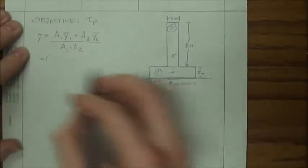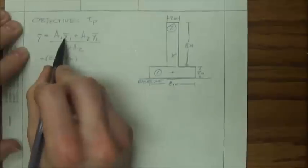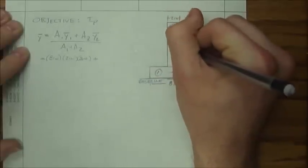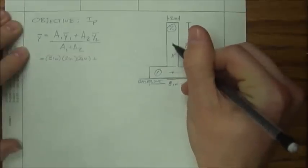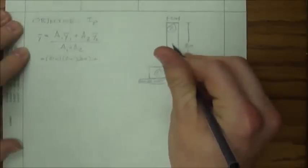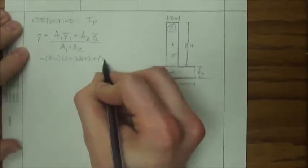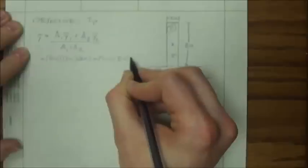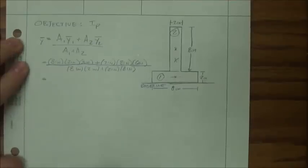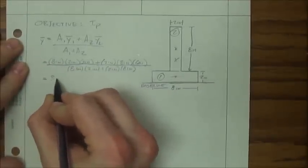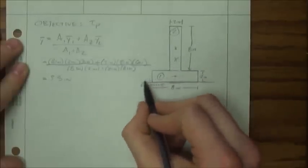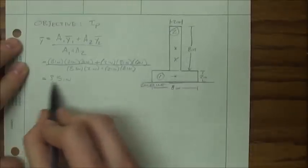The area of object 1 is 8 inches times 2 inches, and Y1-bar is 1 inch. For object 2, the centroid is right in the middle of that object, but we still use the same baseline. So that's 2 inches plus halfway up, which is an additional 4 inches — a total of 6 inches. The area of object 2 is 2 inches times 8 inches, and Y2-bar is 6 inches. The combined centroid works out to 3.5 inches, measured from the baseline.